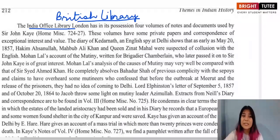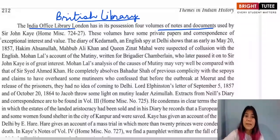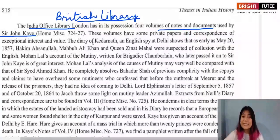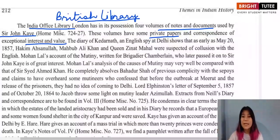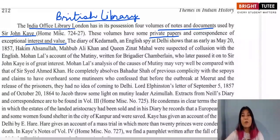The India Office Library section has volumes of notes and documents used by Sir John Kaye, who was in India and participated in the mutiny when it took place in 1857. These volumes contain private papers and correspondence of exceptional interest and value, offering new perspectives beyond the records found in the National Archives or regional archives.